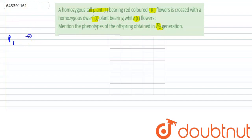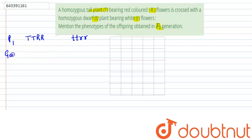The parental generation P1 is homozygous, so it will be capital T capital T and capital R capital R. The other parental generation P1 is small t small t and small r small r.